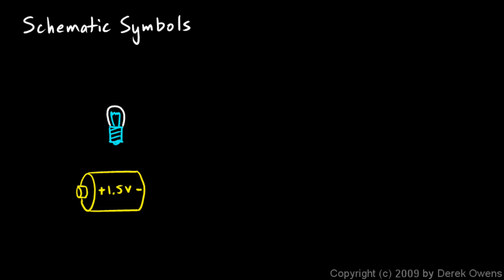Now we will talk about schematic symbols and I'll demonstrate this with an example. Suppose we have a light bulb and a battery and we're going to connect them with some wires like this. Well, now we have a circuit.